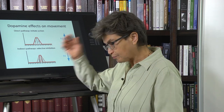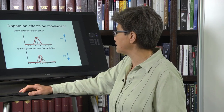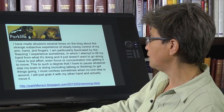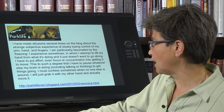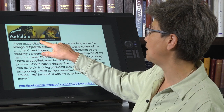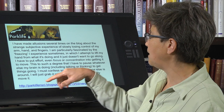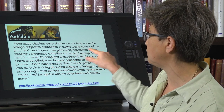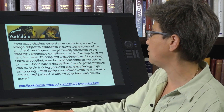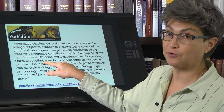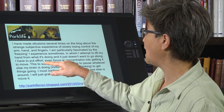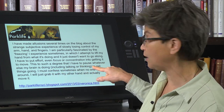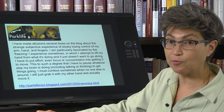This comes from a blog, Park Life in Science, which describes the secret life of a neuroscience professor and principal investigator with Parkinson's disease. The individual says: 'I'm particularly fascinated by the freezing I experience sometimes, in which I attempt to lift my hand from what it's doing and it just doesn't want to go along. I have to put effort — it's no longer automatic, no longer a habit or chunk. I have to focus or concentrate into getting it to move, to such a degree that I have to pause whatever else my brain is doing, including talking or thinking, to get things going. Sometimes when no one else is around, I'll just grab it with my other hand to move it.'